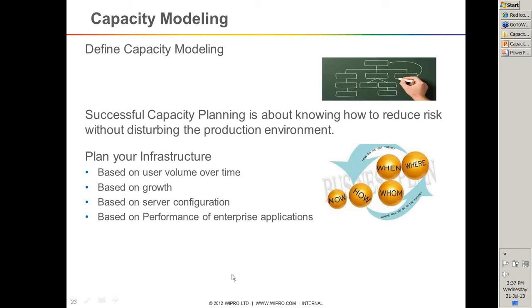You're going to plan your infrastructure based on server configuration, based on the performance of enterprise applications, the number of years, and the number of distributed network nodes. To repeat the definition: capacity modeling and planning is knowing how to reduce risk without disturbing the production environment. This is a joint collaboration between performance testing engineers and capacity planners, which are infrastructure engineers as well.